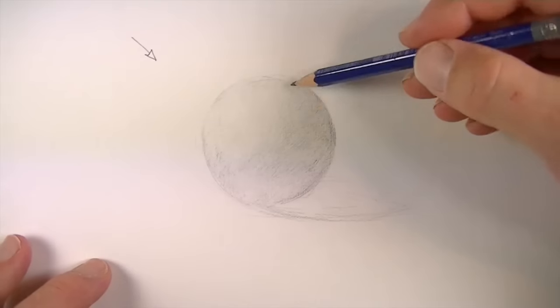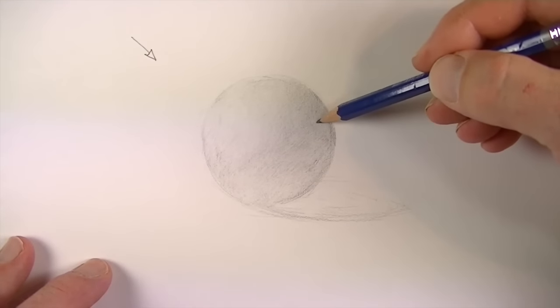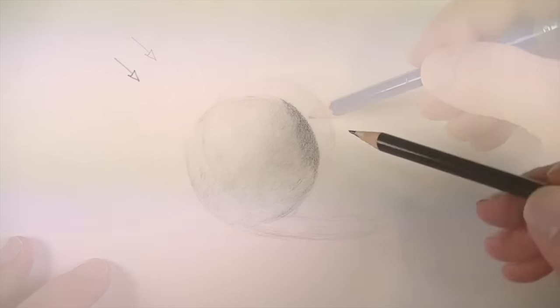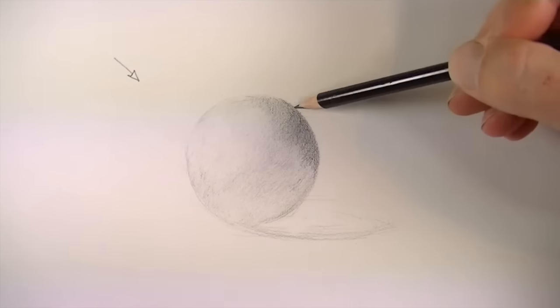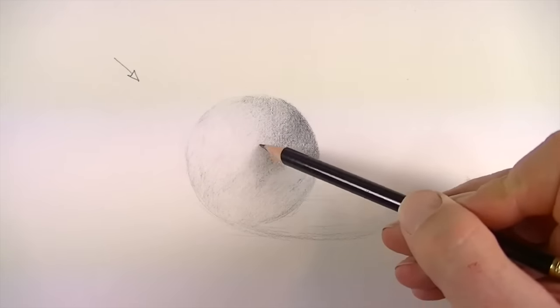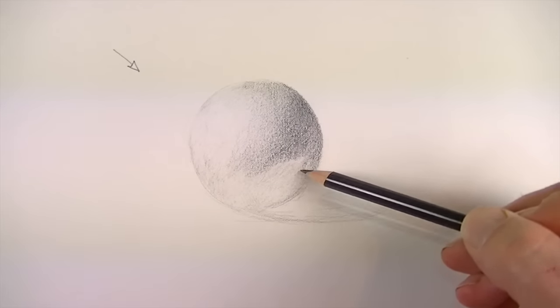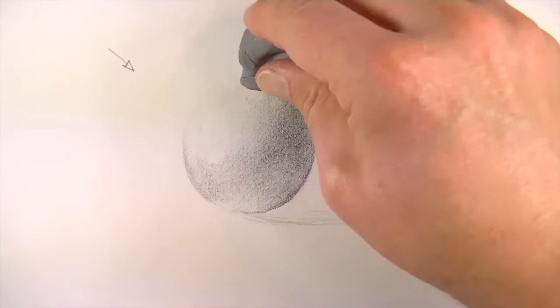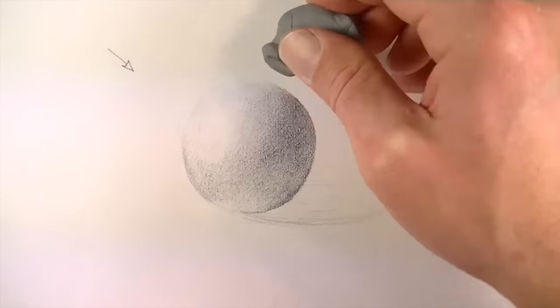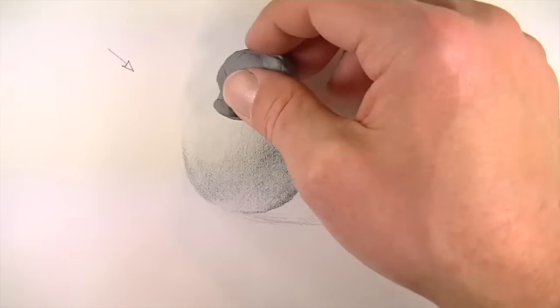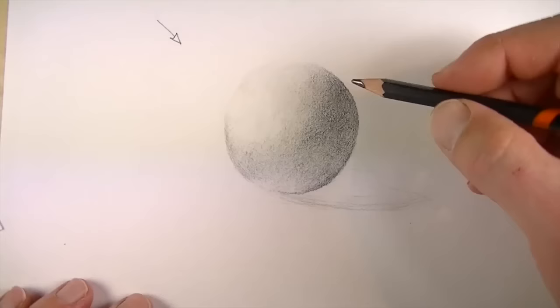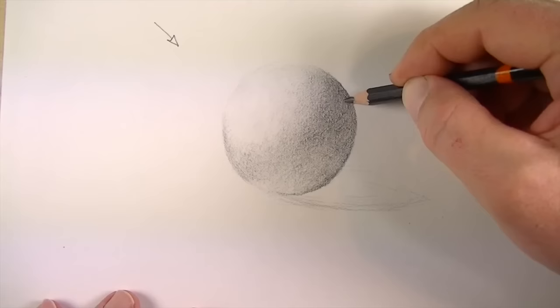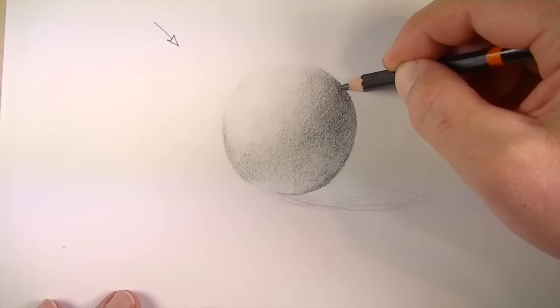All right, now let's start pushing some of these values darker. Now that we've got some of our initial applications on here, we can get a little bit darker. Now to make these darker values, we'll switch over to the 2B pencil, which is a little bit softer. And for that reason, it's going to be a little bit darker than the HB pencil. You just lift some of the value off without really affecting the texture. I'm going to switch over to the 4B pencil now, and we're going to go ahead and make the area of core shadow pretty dark.